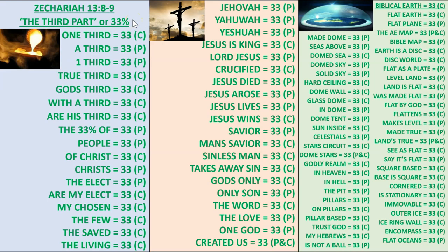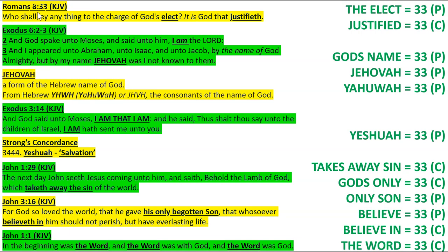If there are words and phrases related to the elect of God, then you would expect there to be words and phrases related to God and Christ also. This is the case, as seen in the second column, which consists of some of the most identifiably biblical words and phrases: Jesus is King, Crucified, Saviour, Takes away sin, The Word, One God — all equal 33. Many of these you may recognize from popular Bible verses, such as Romans 8:33: 'Who shall lay anything to the charge of God's elect? It is God that justifieth.' The elect, justified — 33.